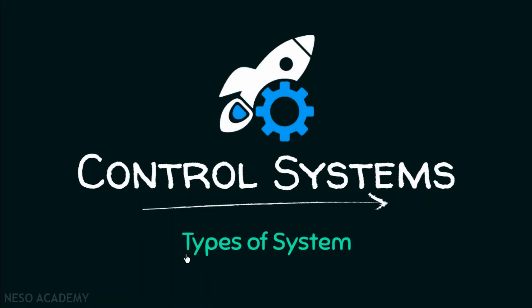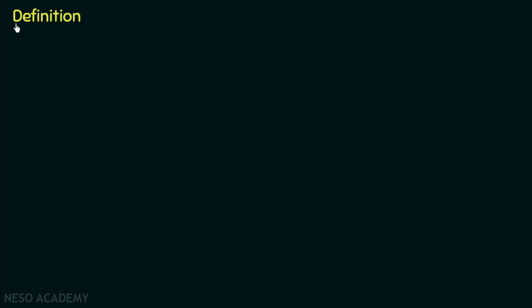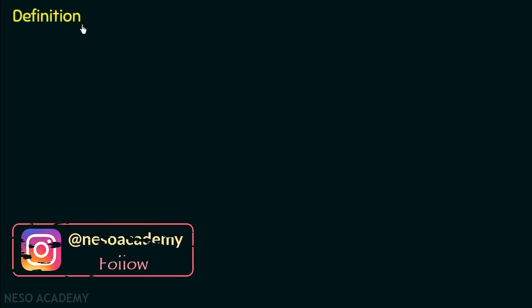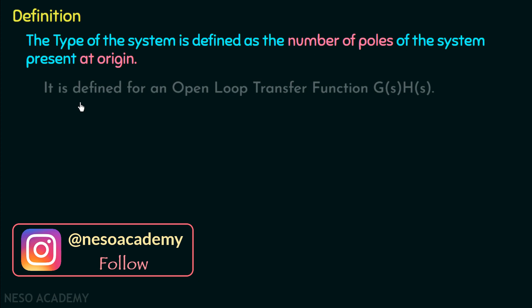Hello everyone and welcome back to the next lecture of control systems. In this presentation we are going to discuss the types of system. We will first see the definition of the type of system. The type of system is defined as the number of poles of the system present at origin. It is defined for an open loop transfer function G(s)H(s).